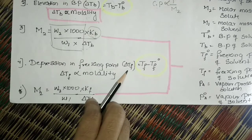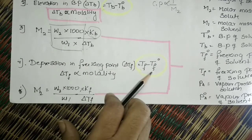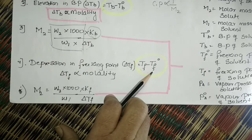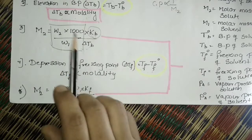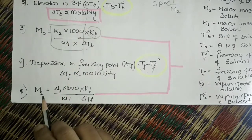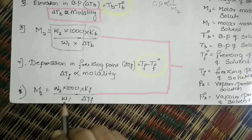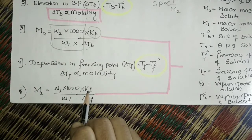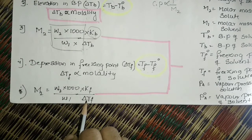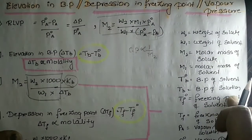For depression in freezing point, delta Tf equals T0f minus Tf. The freezing point of the solution is always lower than the freezing point of the pure solvent. Delta Tf is also directly proportional to molality. The corresponding formula is: M2 equals W2 × 1000 × Kf divided by W1 × delta Tf. Here Kf is the cryoscopic constant or freezing point depression constant.